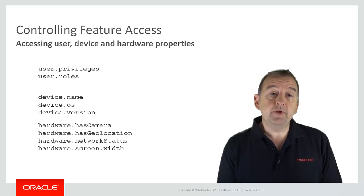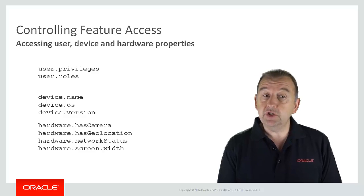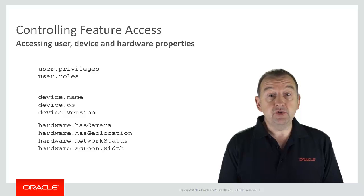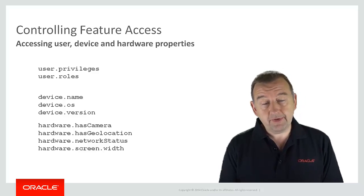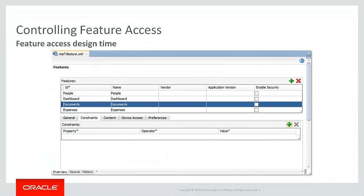These are only a small example of some of the properties you can access, but where can you actually use them? There are a number of places. So let's take a quick look at this within JDeveloper. Firstly, you can control access at the feature level — so whether a feature will be made available in your application. In this example, I might decide that my document capturing feature is only available if the device has a camera, since that's how the feature captures documents.